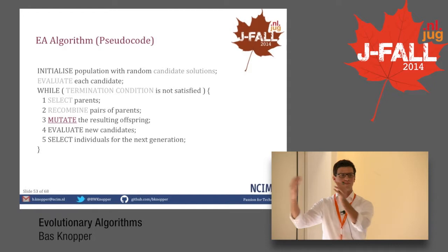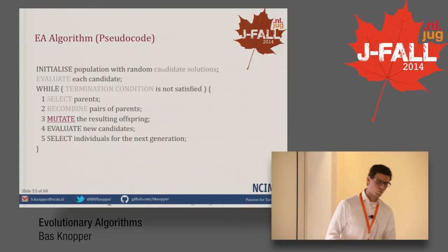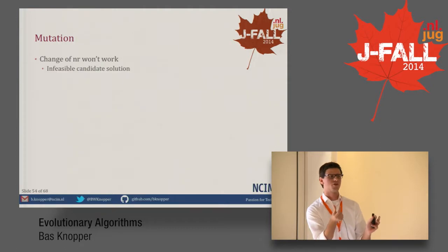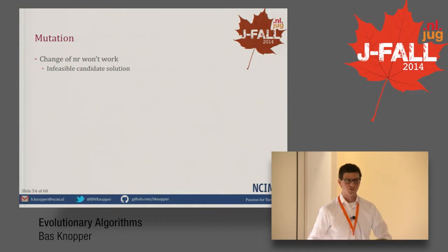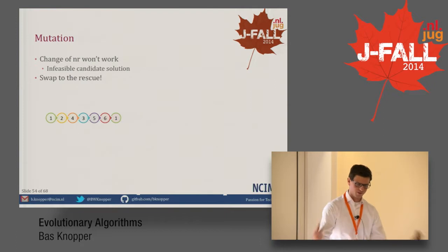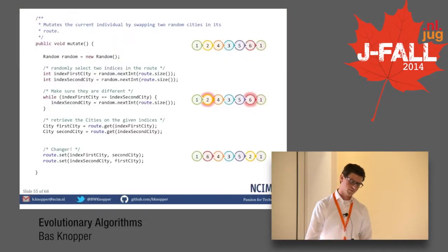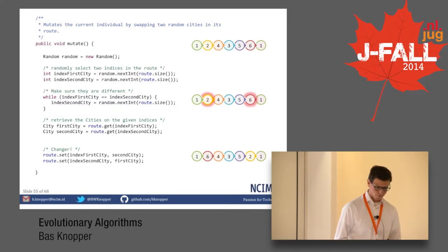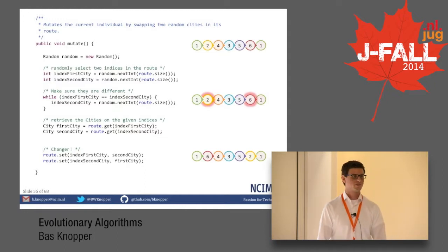With a certain probability, we'd like offspring to mutate. Changing a number won't work because we'd violate the constraint of visiting every city only once — but swap to the rescue. What we do is pick two random cities and swap them. In code: the mutate method randomly selects two indices, makes sure they're different, gets the candidate at the first index, gets the candidate at the second index, and swaps them. That's it.